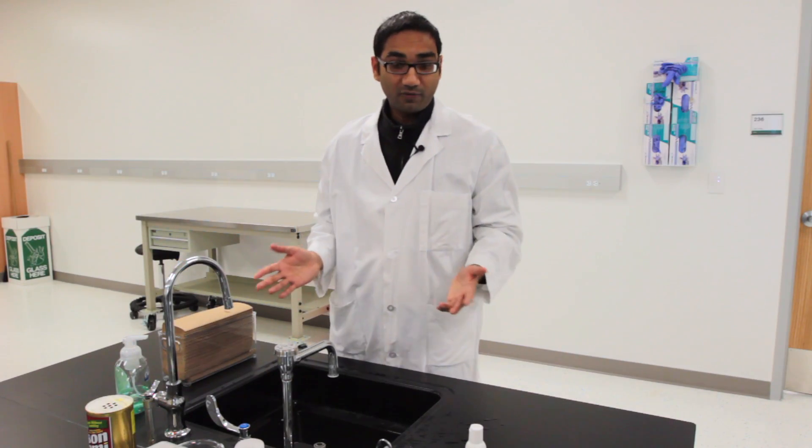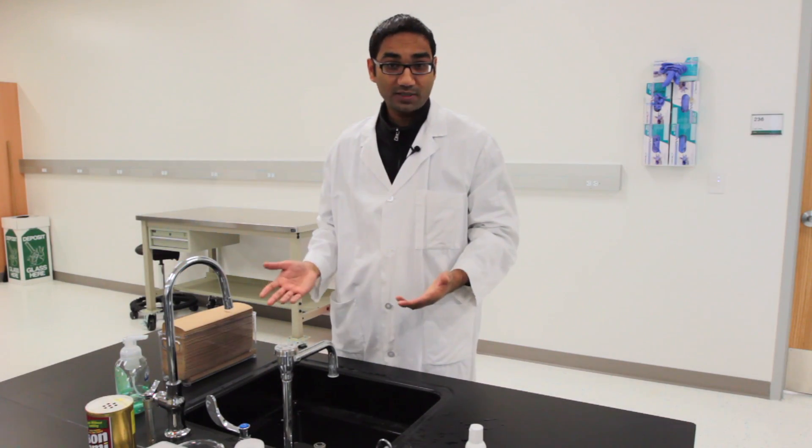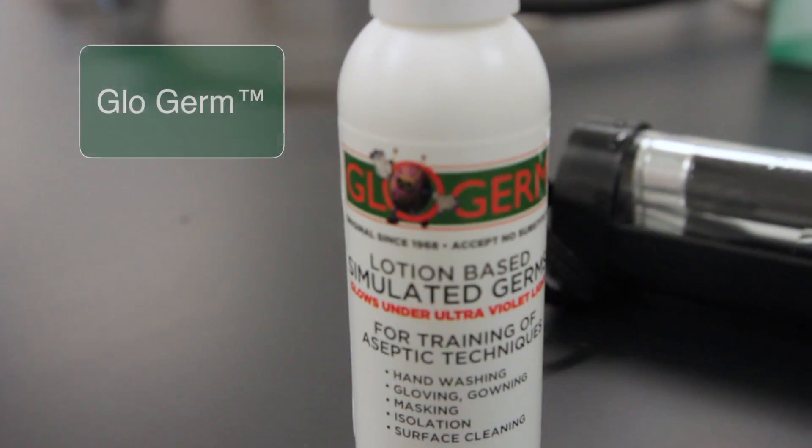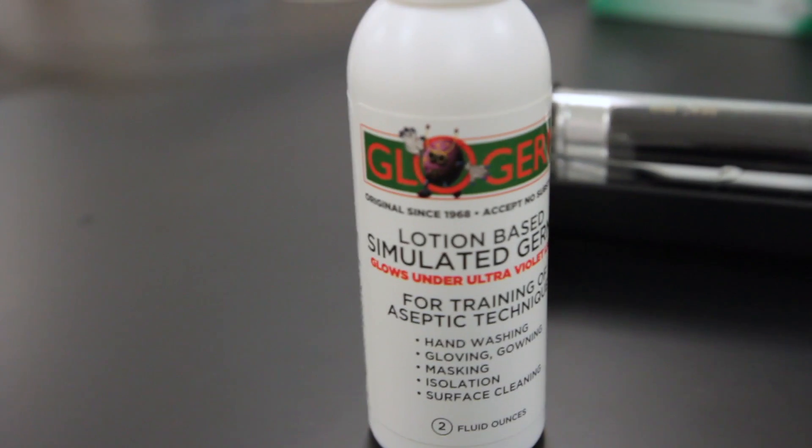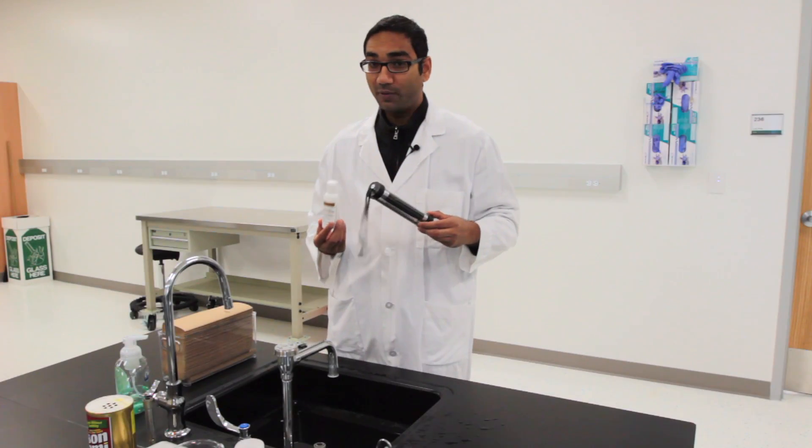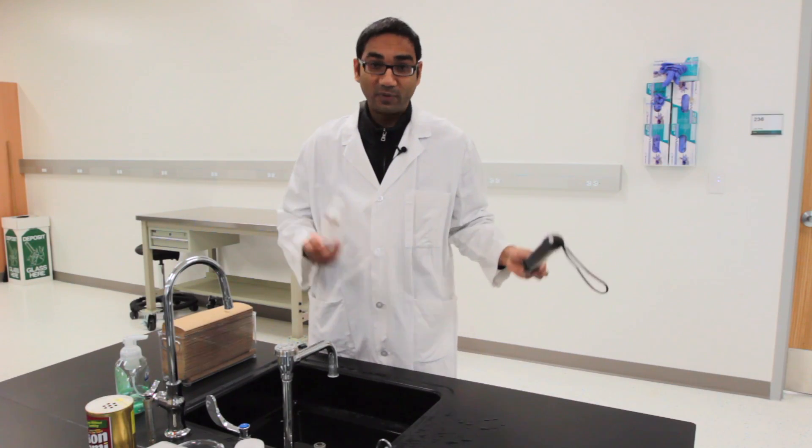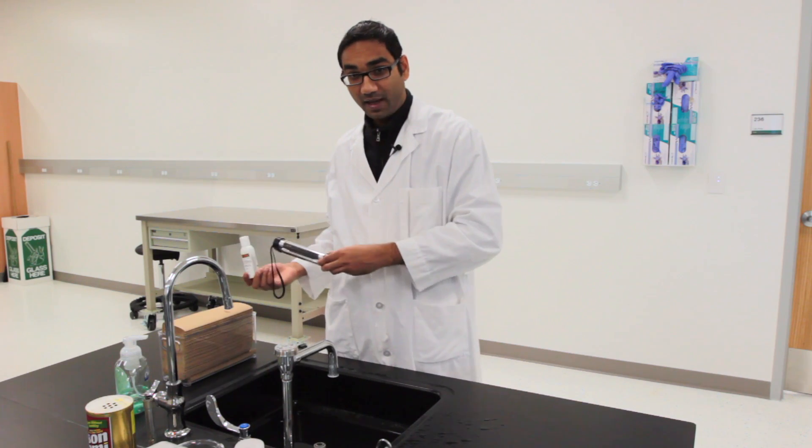Now, actually before doing this trial of hand washing, I put some Glo Germ. If I did not wash my hand properly, then my hand would illuminate under the black light. So now I will show you what it looked like before and what it looked like after my hand washing and if I did a great job or not.